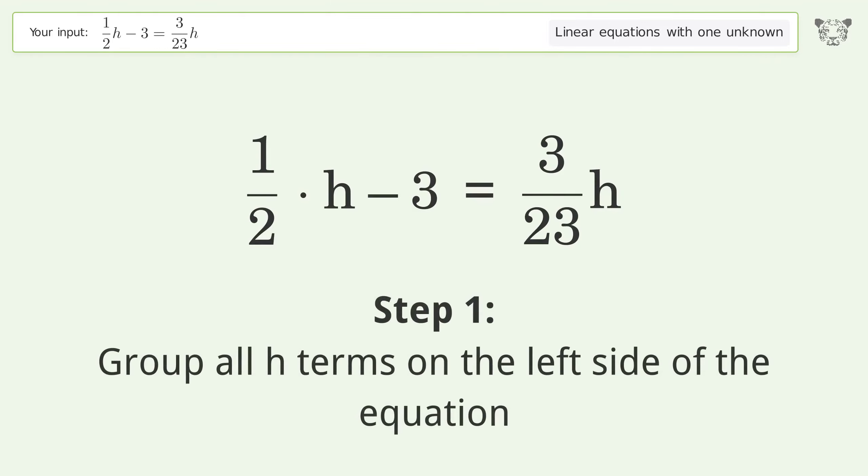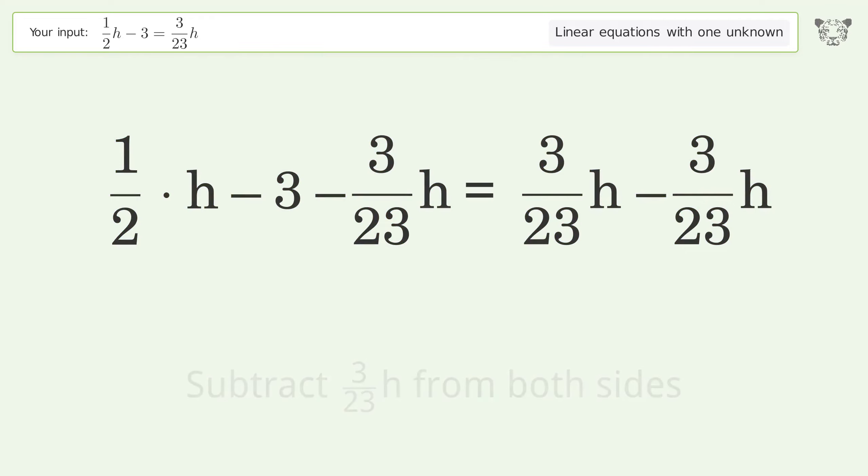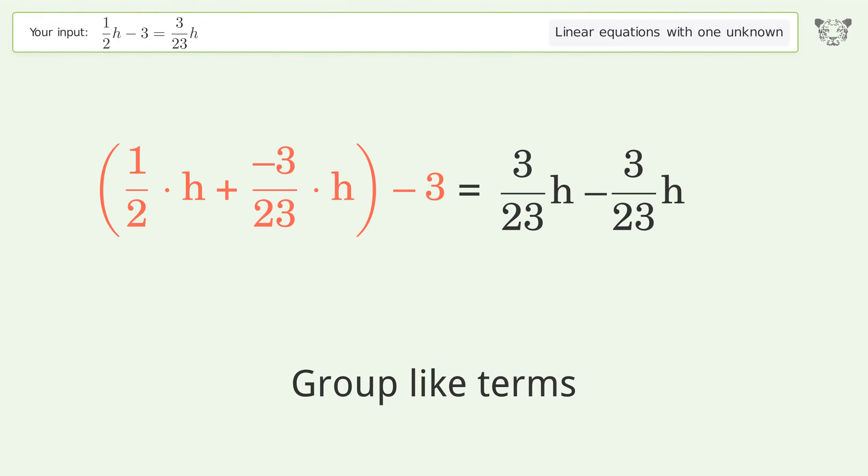Group all h terms on the left side of the equation. Subtract 3 over 23 h from both sides. Group like terms. Group the coefficients.